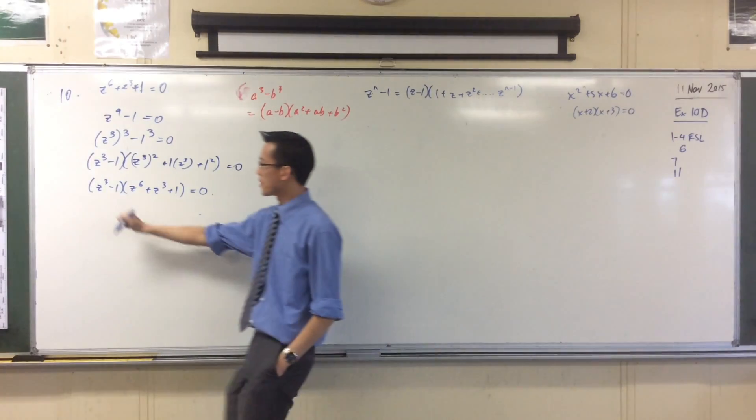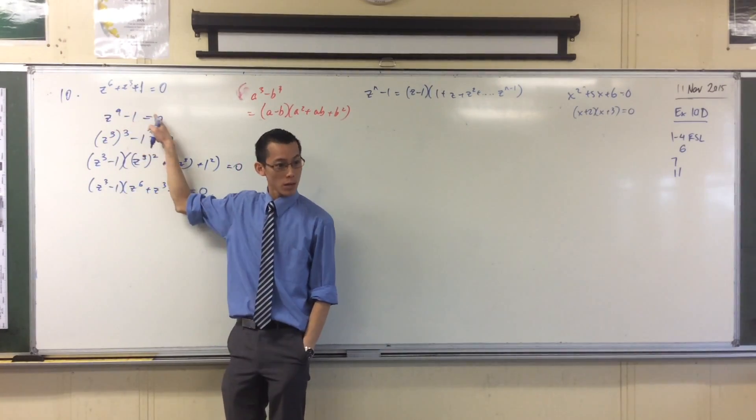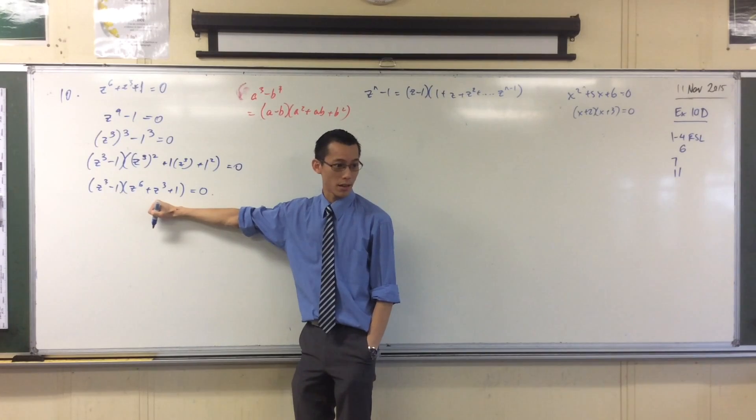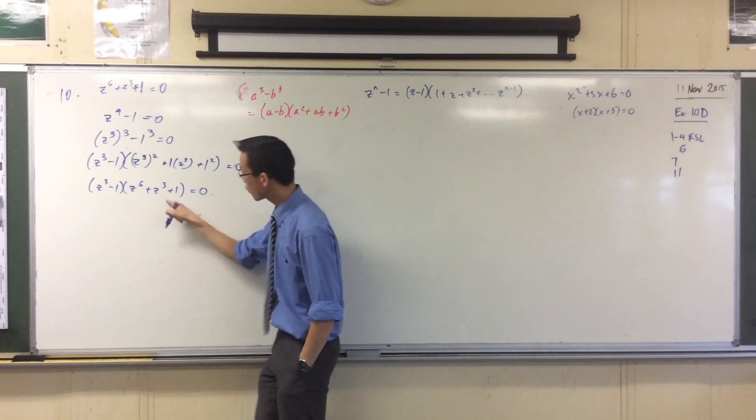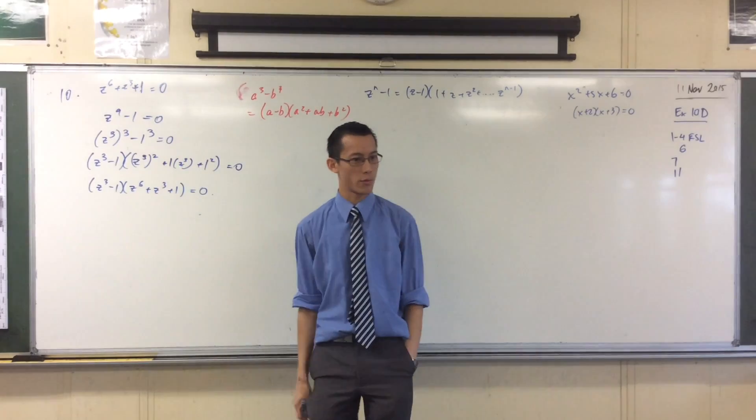So, therefore, the solutions of z^9 - 1 are here and here. Everything that solves this will solve your original, and everything that solves this will also solve your original.